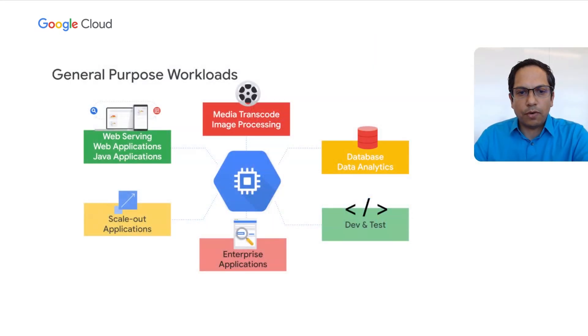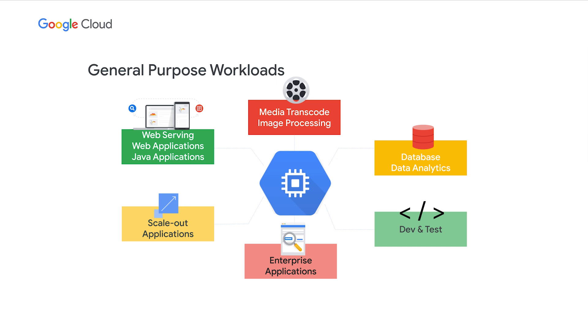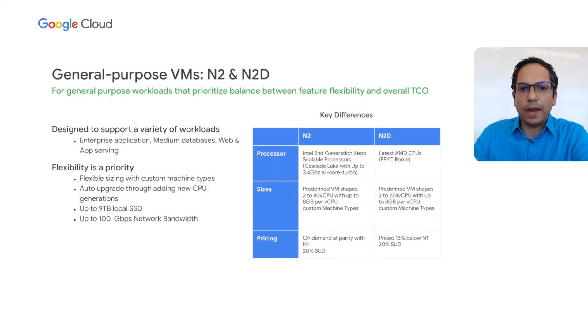One of our core philosophies at Google Cloud is to enable our customers the flexibility to choose the right virtual machine to run their various workloads. General-purpose workloads make up a wide variety, from simple web serving to complex media transcoder processing, data analytics, dev and test, and various enterprise applications. Our general-purpose N2 and N2D VMs are designed to support such workloads by offering a perfect balance of compute and memory resources, up to 224 vCPUs with 864 gigabytes of memory.